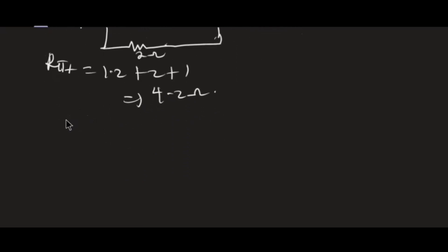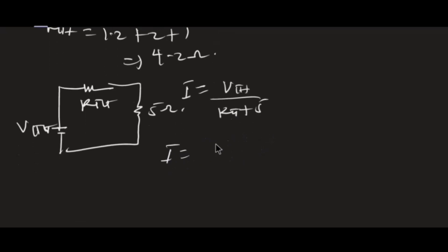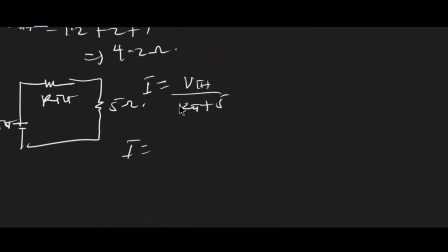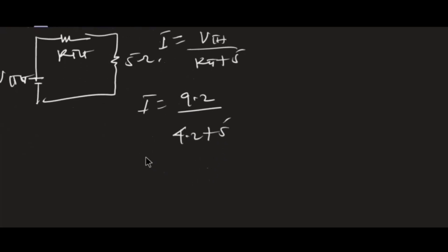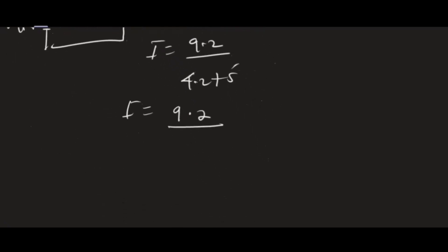Finally, to determine the current in the 5 ohm resistor, I draw the Thevenin equivalent circuit: VTH in series with RTH in series with the 5 ohm resistor. The current I = VTH / (RTH + 5) = 9.2 / (4.2 + 5) = 9.2 / 9.2 = 1 ampere.